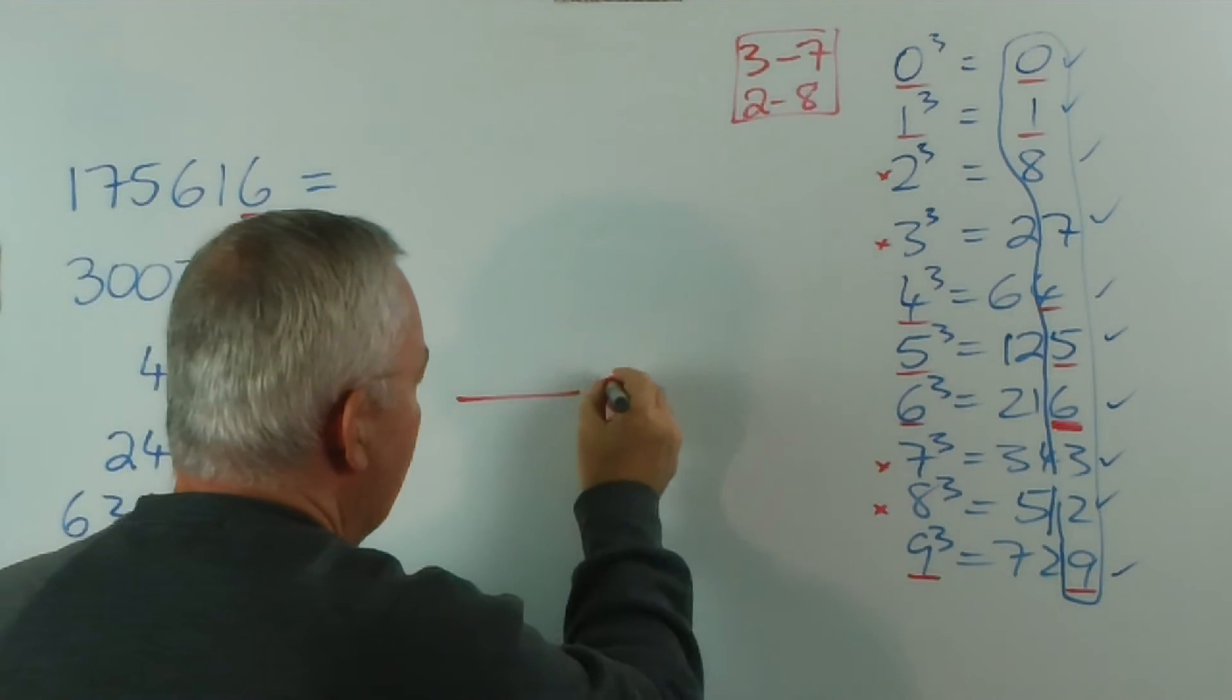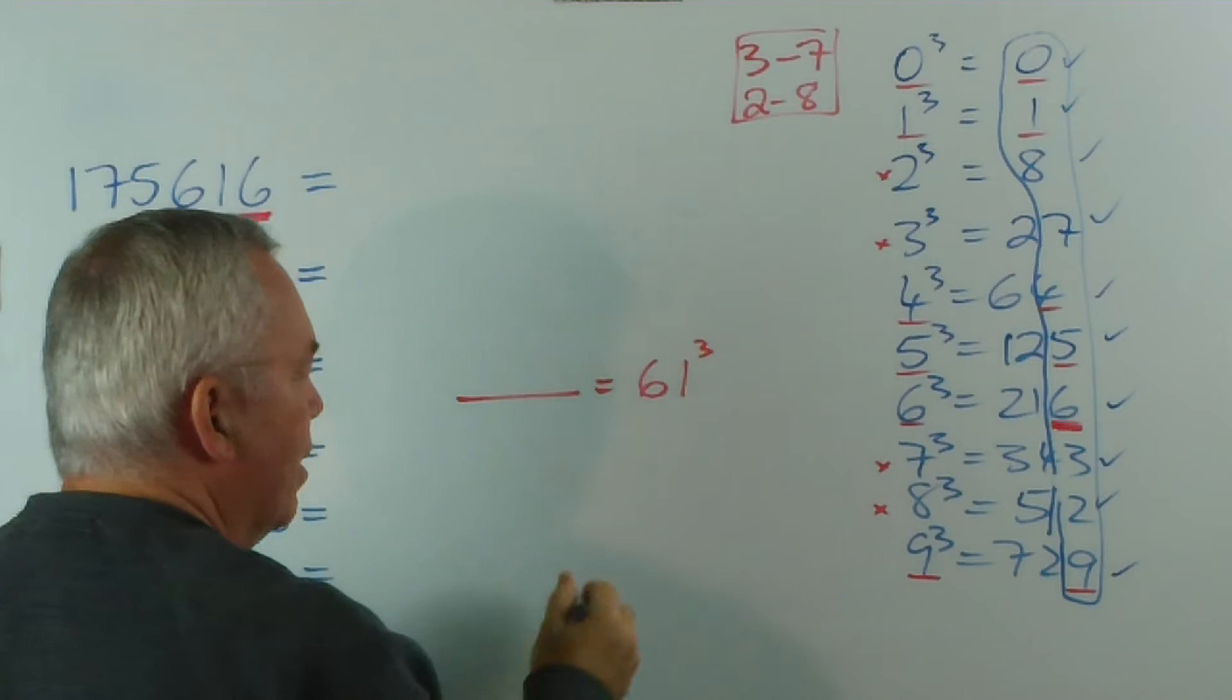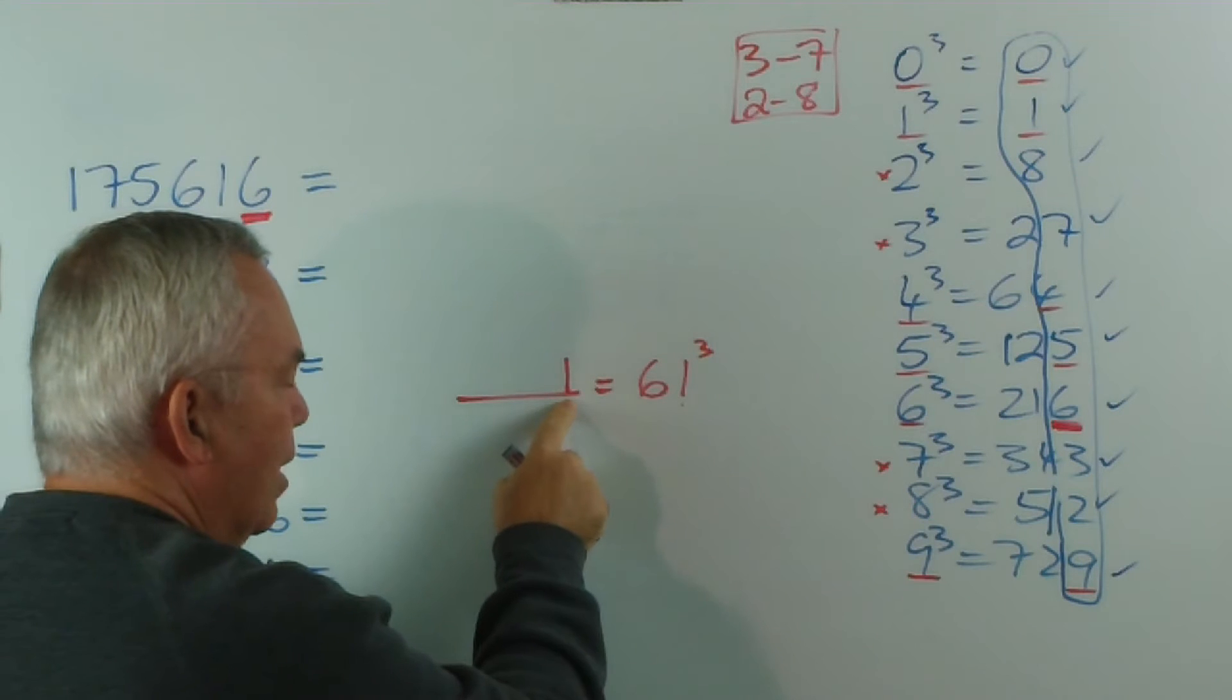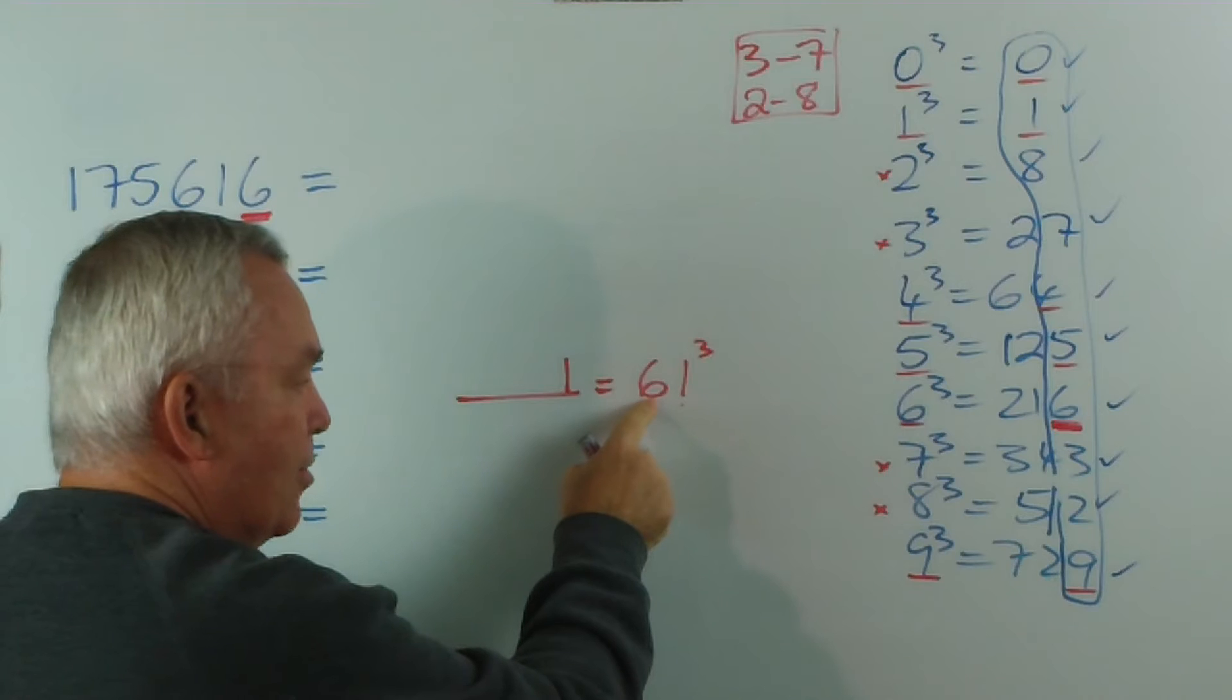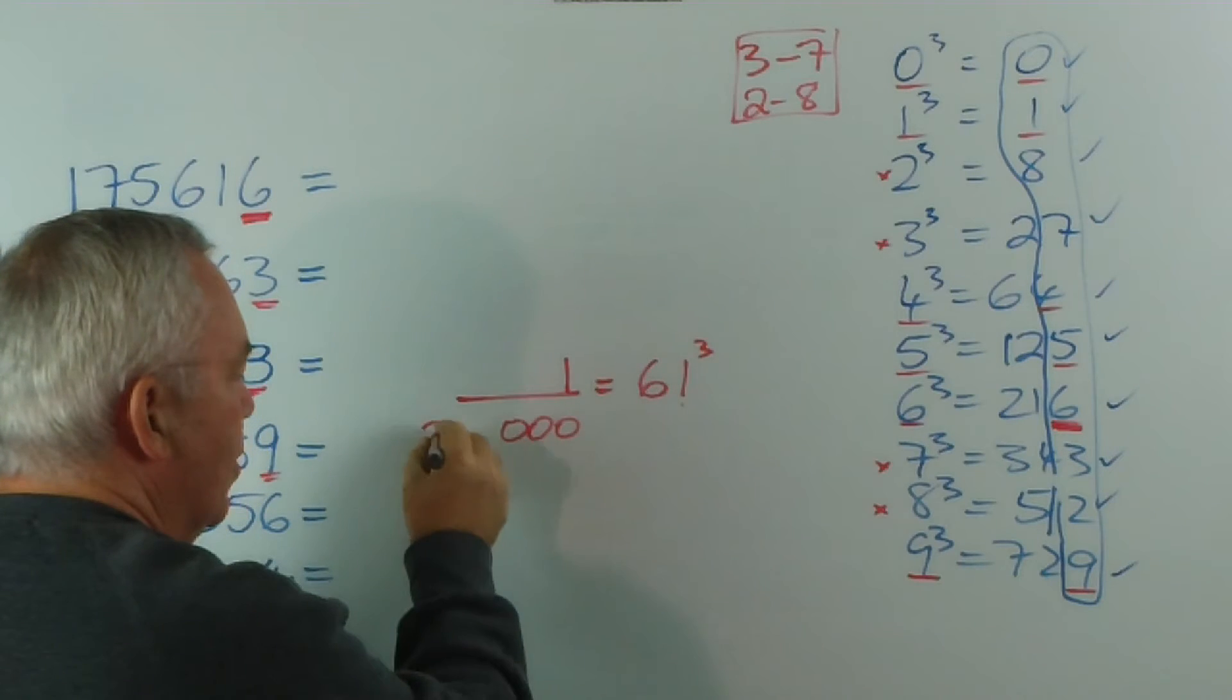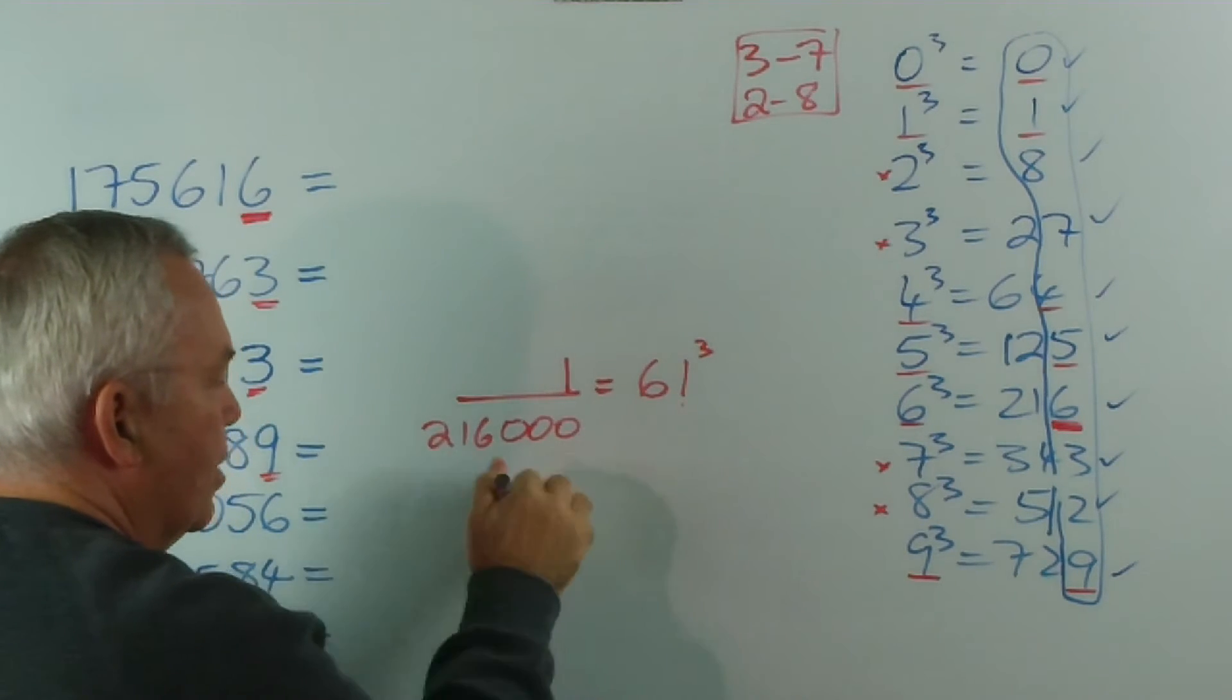Remember, that if we have something equal to, let's say, sixty-one cubed, the one cubed will guarantee we get a one here. The sixty, remember, that six stands for sixty. Sixty cubed is going to have a zero, zero, zero, and six cubed is two, one, six. Where else? Six cubed is two, one, six. So, sixty cubed will be this. Notice, this is in the thousands.